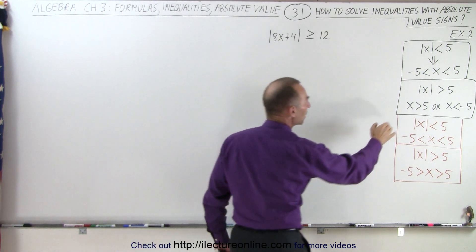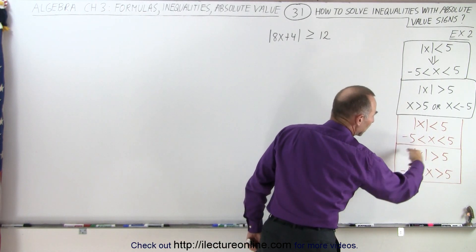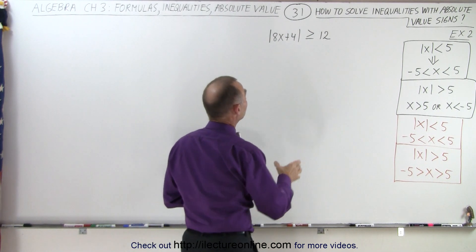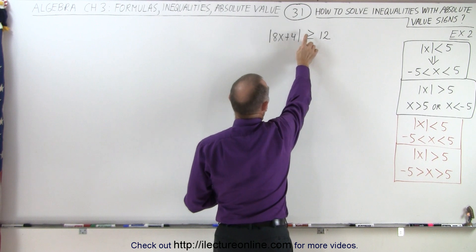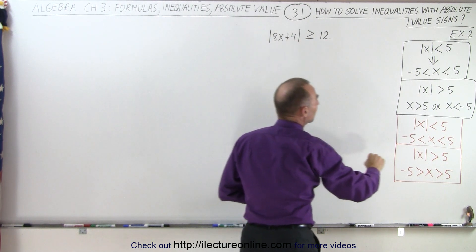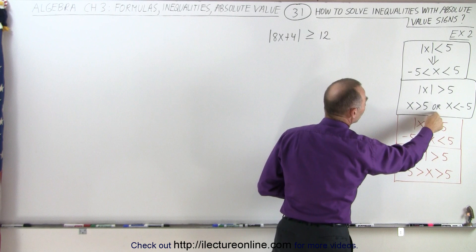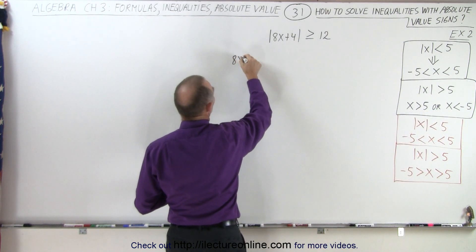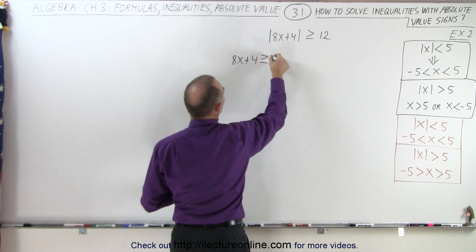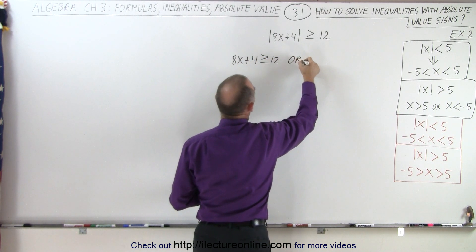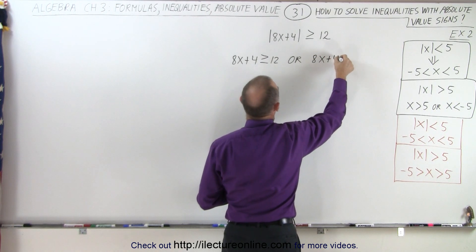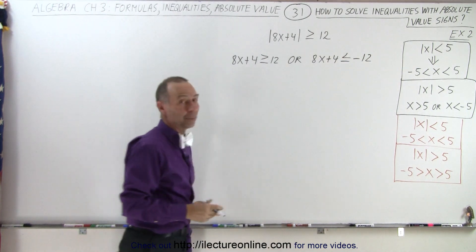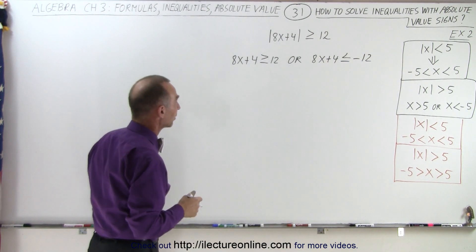We're going to use the rule over here, and then show you how you can easily solve it this way as well. If something inside the absolute value signs is greater than or equal to 12, that means it's either greater than that number or smaller than the negative of that number. So we can write that 8x plus 4 is greater than or equal to 12, or 8x plus 4 is less than or equal to negative 12. Now we're going to solve both of those inequalities separately.